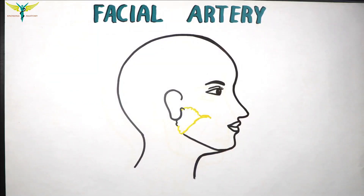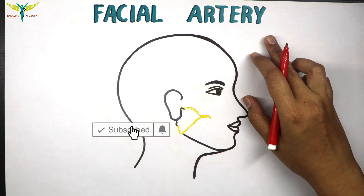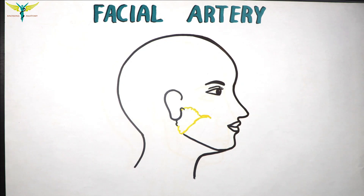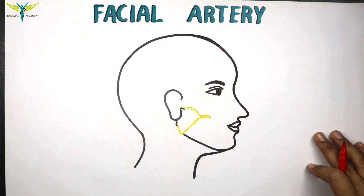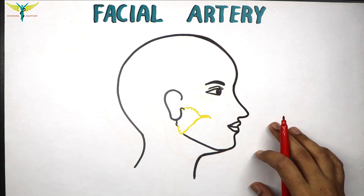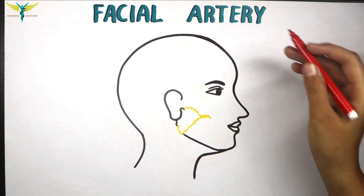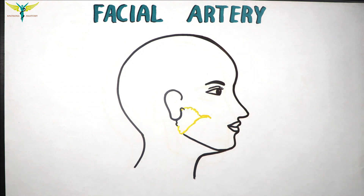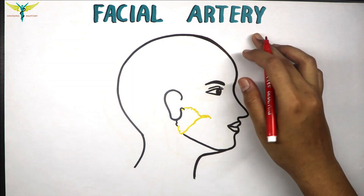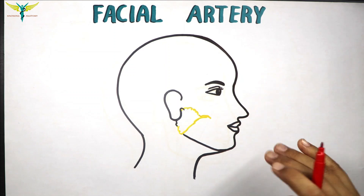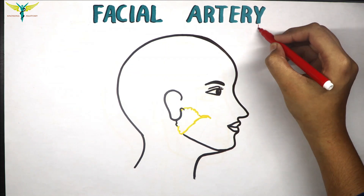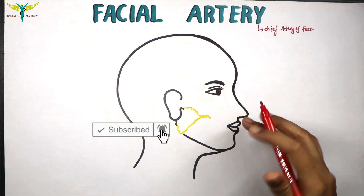The face is a highly vascular region, supplied by major arteries. The facial artery accounts for the main arterial supply, along with the transverse facial artery and a few arteries of the cutaneous nerves. The facial artery is also called the chief artery of the face. Let's learn about the parts and branches of the facial artery in the face.